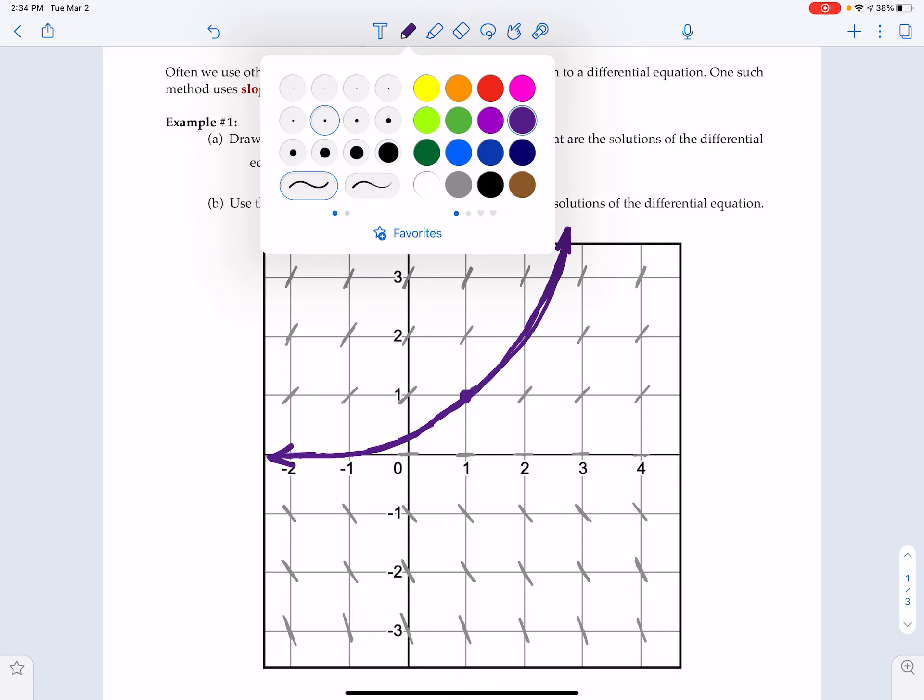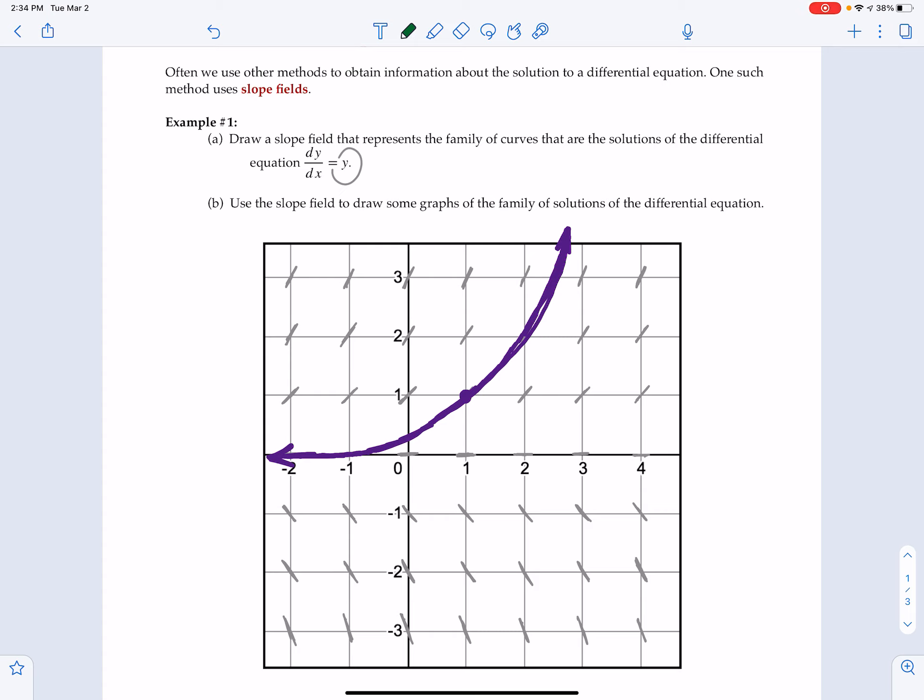And when I get there, what we see for this first line is we have almost what looks like an exponentially shaped curve. What if we picked a different starting point? What if we picked a starting point of 2, negative 2? We have our starting point. We're going to follow, and it's going to look like this. And because of this horizontal section at y equals 0, we're kind of all filtering towards the same point. Let's try one more. What if we picked 3 comma 0? Well, it's horizontal to the right and it's horizontal to the left.